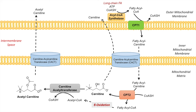So carnitine can be recycled into two forms: it can be recycled into acetylcarnitine and carnitine. And once we have carnitine back in the cytosol, it can then be utilized to bring in more fatty acyl chains into the mitochondrial matrix for beta-oxidation.